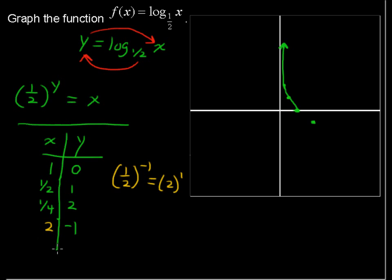What if y is negative two? That is one-half raised to the negative two. That equals the reciprocal, two raised to the positive two, which equals four. So when x is four, say that's two, three, four, y is negative two.